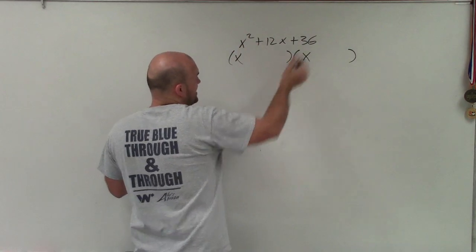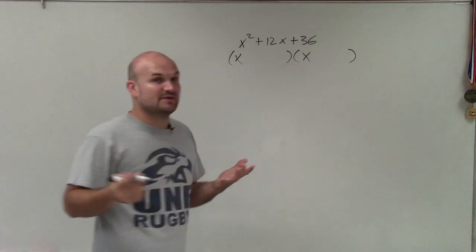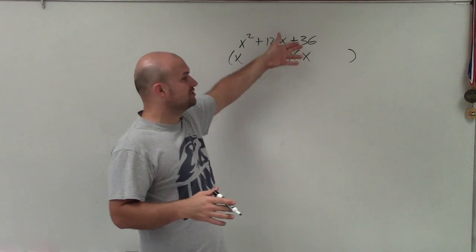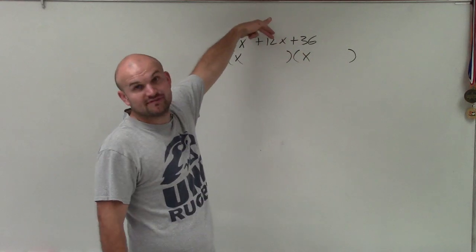First of all, we know that's a square term, x times x. Is 36 a squared number? Yes, it is. We can rewrite 36 as 6². So 6 times 6 gives us 36, and 6 plus 6 gives us 12.